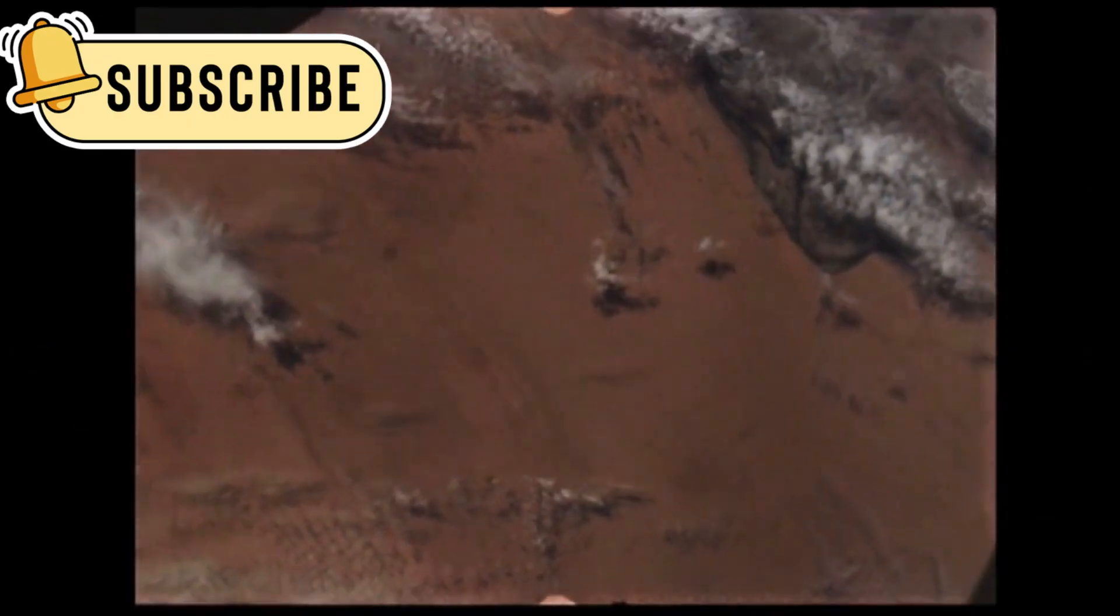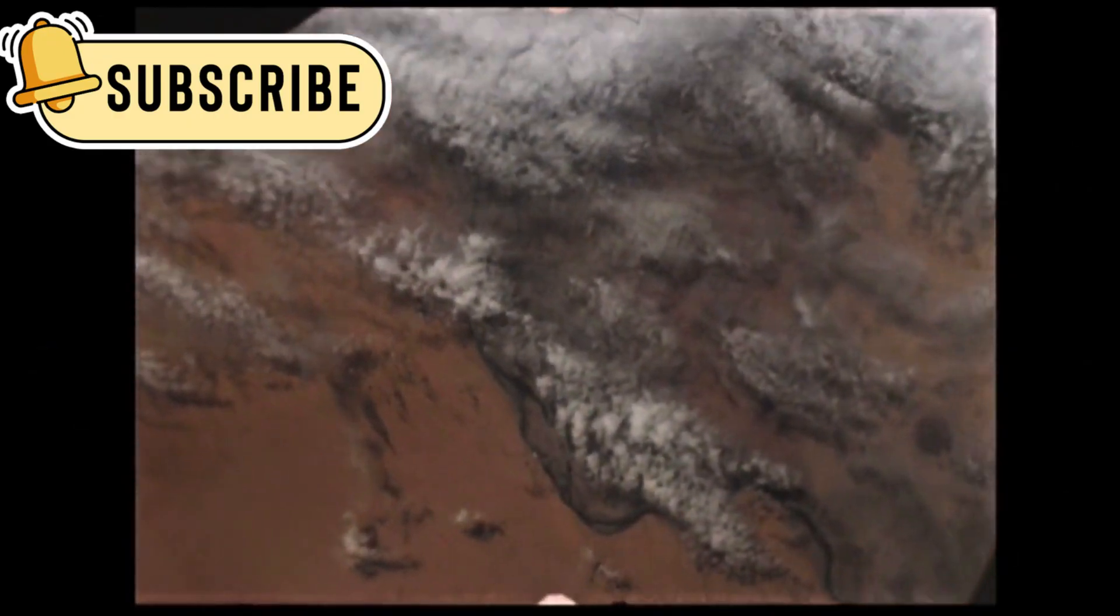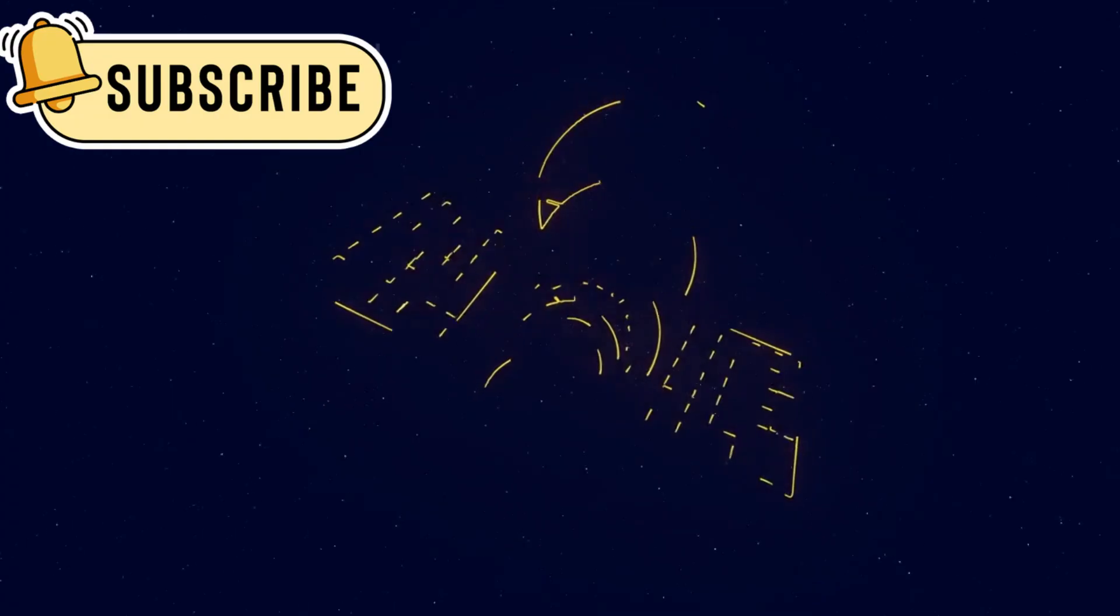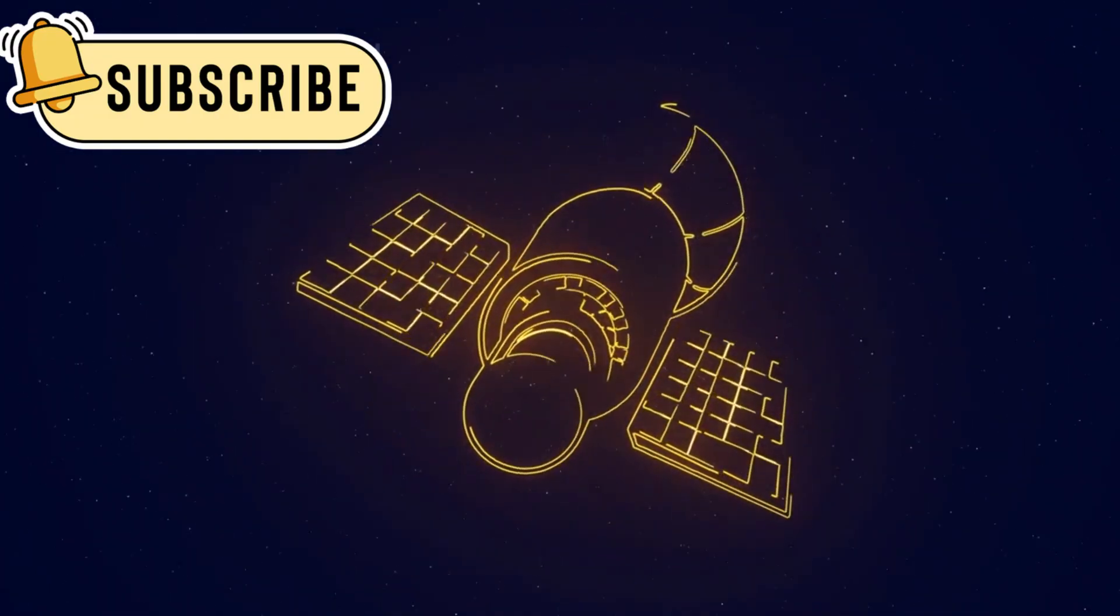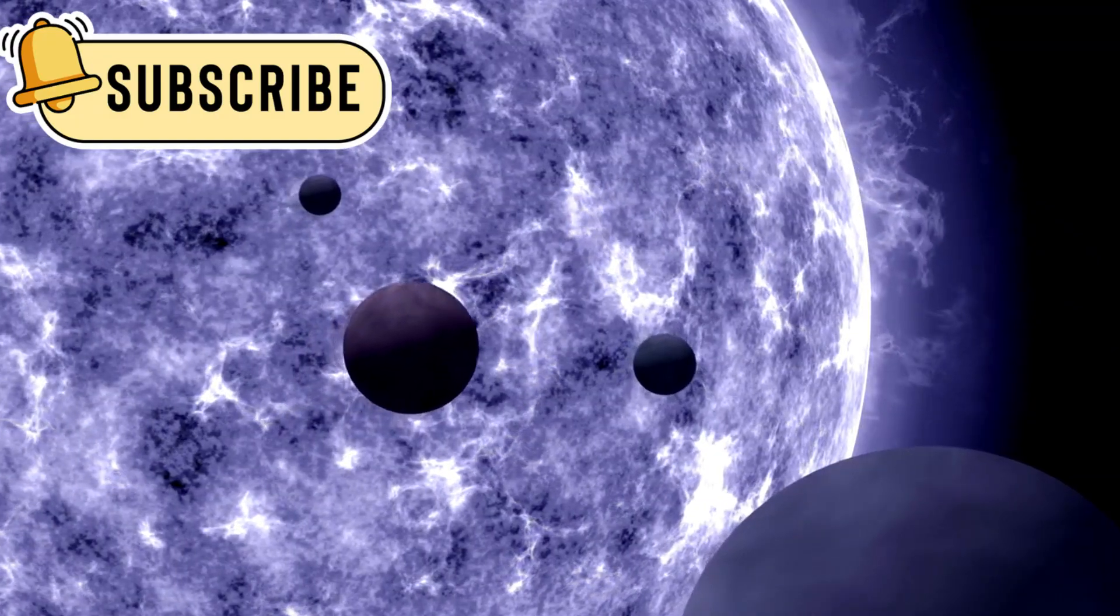For many years, Pluto was seen as just a frozen rock at the edge of the solar system. It was too far, too small, and too cold to be of much interest. But that view is now changing.